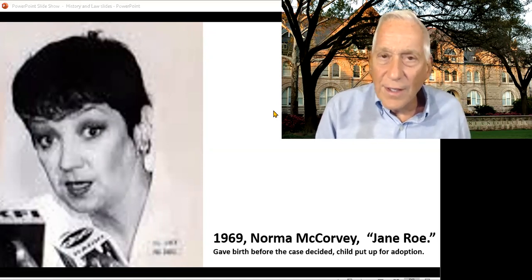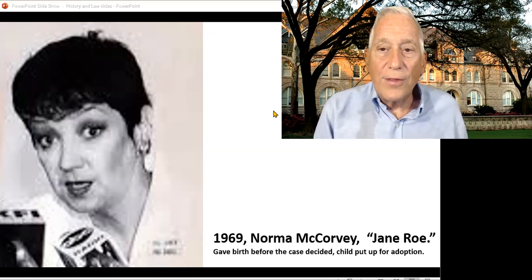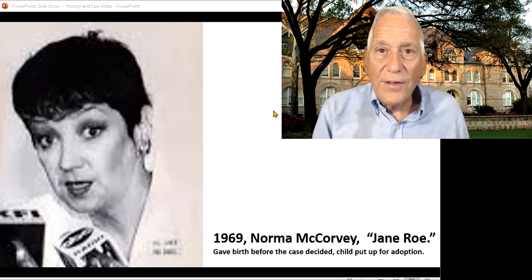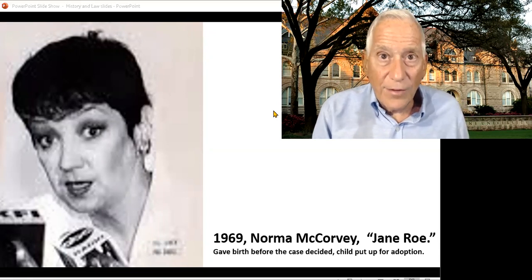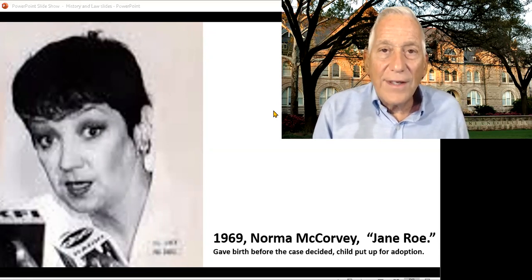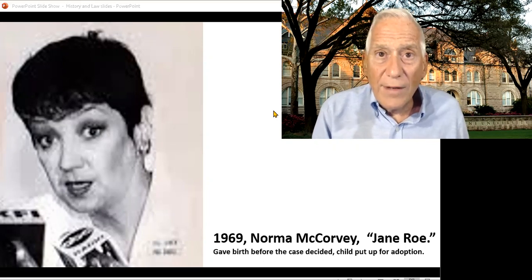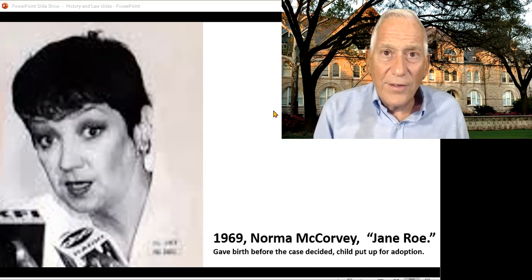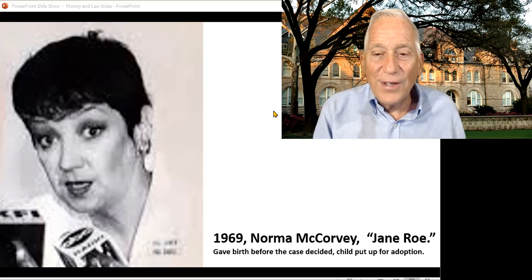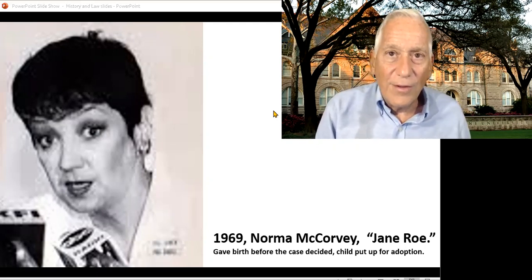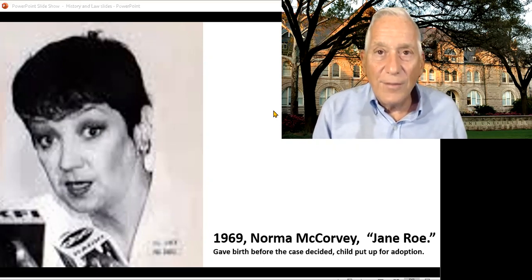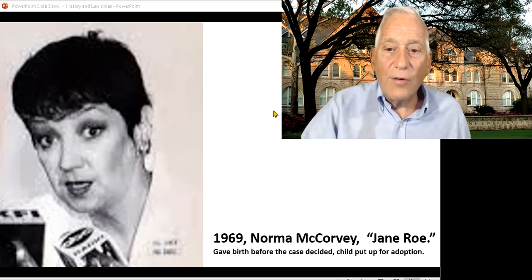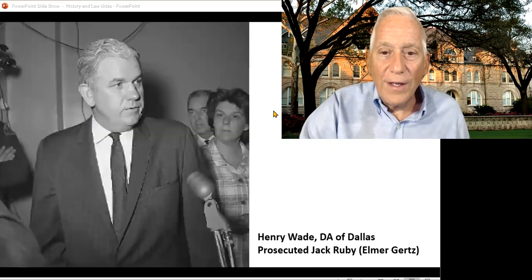But Texas didn't really allow abortions, only for the life of the mother — her life wasn't threatened. So she finds a couple of lawyers and decides to take a case, and to preserve her privacy, she doesn't make it Norma McCovey versus Texas. She uses the pseudonym Jane Roe, and it becomes the case of Roe v. Wade.